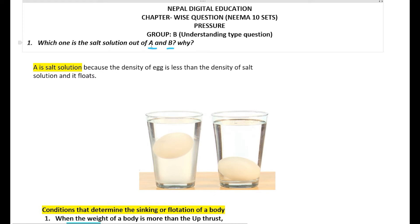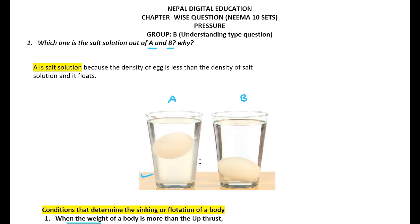So our problem is which one is the salt solution out of A and B. Obviously, A is the salt solution, because in A the egg is floating — the density of the egg is less than the density of this solution. We know that the density of salt solution is more than the density of ordinary water, so the egg floats in A. Therefore, A is the salt solution.